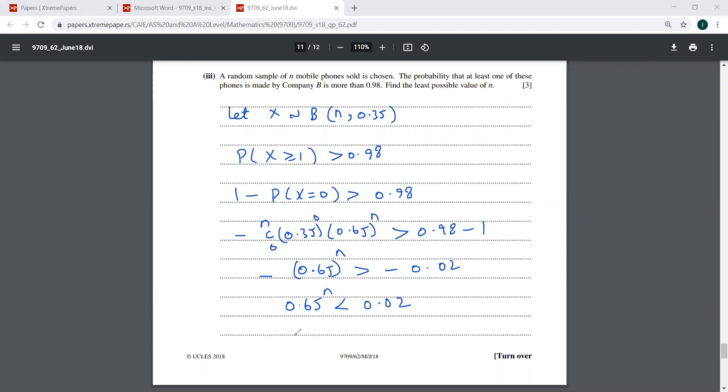And then you apply the natural log on both the sides. This is going to be N ln 0.65 is less than ln 0.02. And then you have it here.